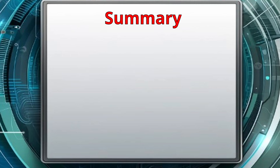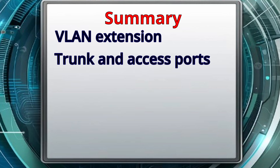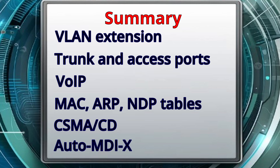That's it for this lesson. We covered a lot of information about VLANs — how switches are subdivided into subnets, and how we can extend switches to include additional devices on a VLAN. We discussed trunk ports, access ports, and tagging, and how to further subdivide a VLAN to utilize VoIP. We went over MAC addresses, ARP, and NDP tables and how they're built, and finished by covering CSMA/CD and how Auto-MDI-X makes it easier to connect devices on a network. If you implement these VLAN features correctly, you can do a lot to keep your traffic protected and your network running smoothly.